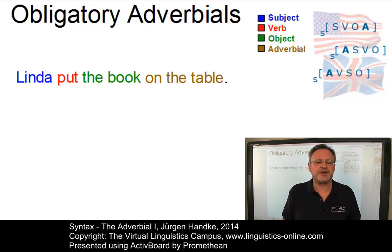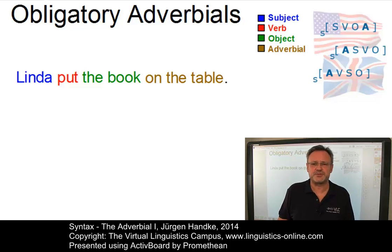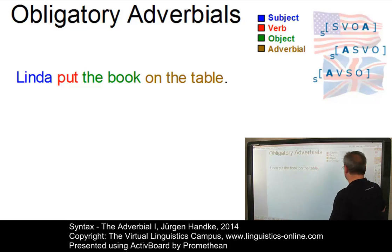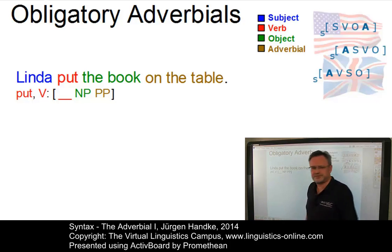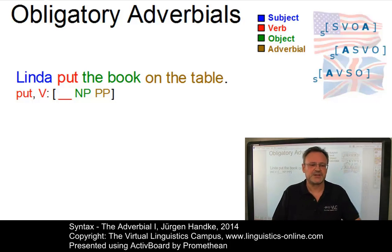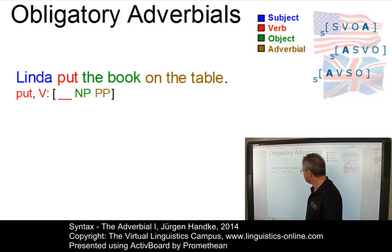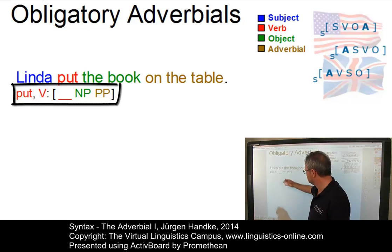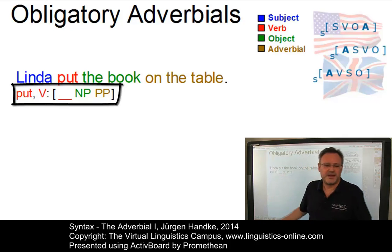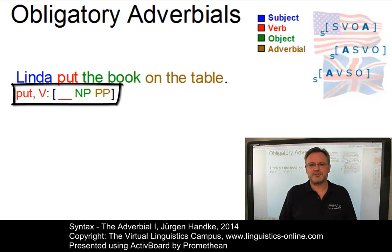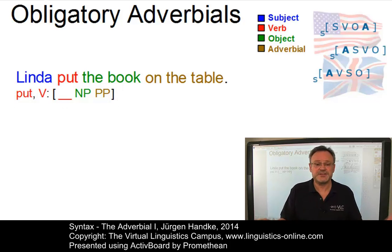This obligatoriness of the adverbial is guaranteed by what in some syntactic approaches is referred to as a sub-categorization frame. Here is the sub-categorization frame for 'put' — that is, a structure that defines the obligatory local context of a given category. The sub-categorization frame for 'put' can be read as follows: 'put' is a verb and it requires a noun phrase and a prepositional phrase as its local complements. If any of these is missing, a sentence with 'put' becomes ungrammatical.